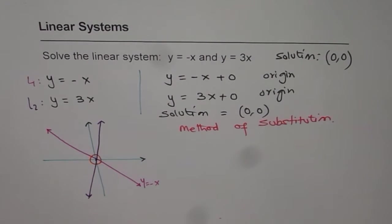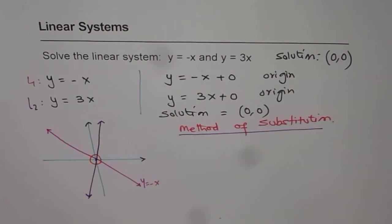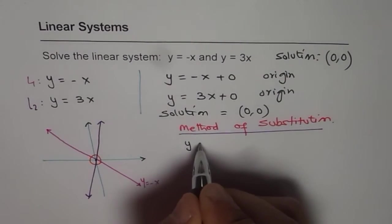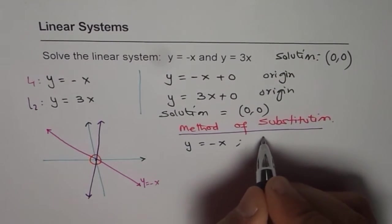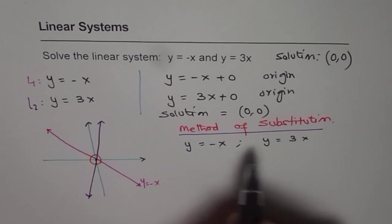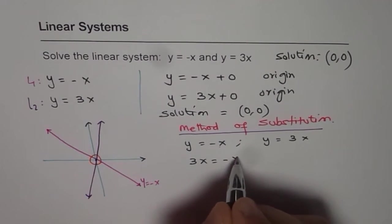It may so happen that you may not be in a position to appreciate it right in the very beginning. So in that case, we are given two equations: y equals minus x and y equals 3x. So since both are y's, we can equate them as 3x equals minus x.